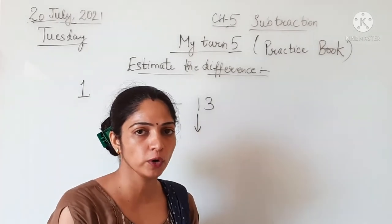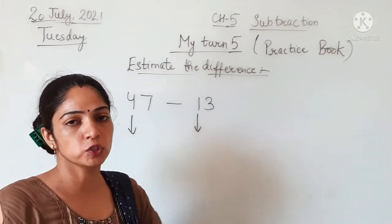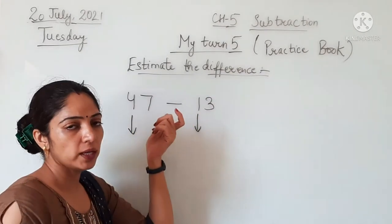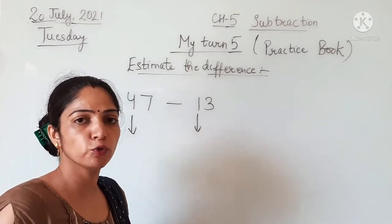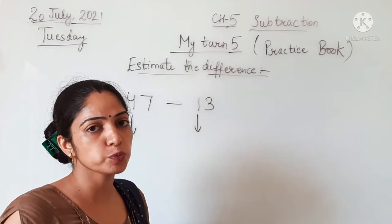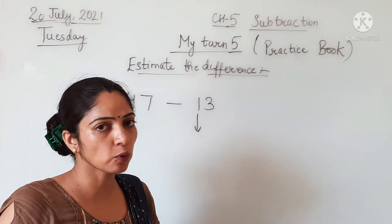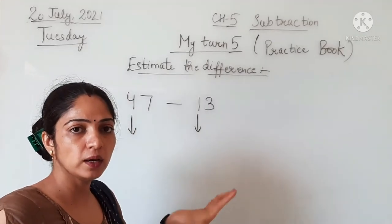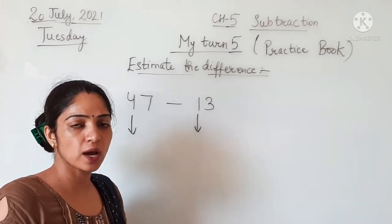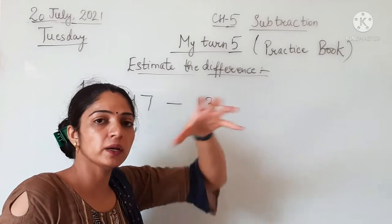My Turn 5. Our question is estimate the difference. We have to estimate the difference, which means first of all we have to round off the given numbers, and then we find the difference between the rounded numbers. We will round off to the nearest 10, which has been asked to you, and then you have to calculate the difference between the rounded numbers.